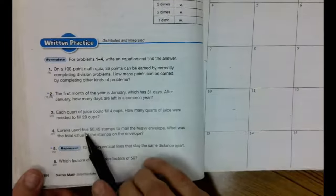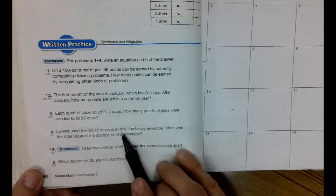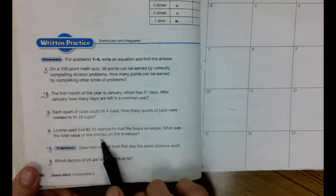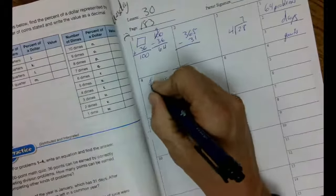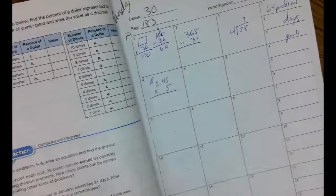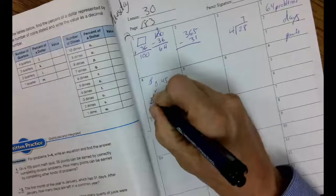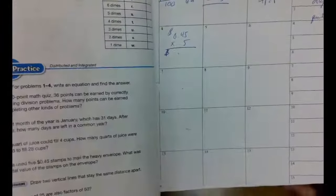All right, look at number four. Lorena used five 45-cent stamps to mail a heavy envelope. What was the total value of the stamps on the envelope? Five groups of 45 cents. Easy multiplication one. Don't forget your decimal point and your dollar sign in your answer. You can solve that one on your own.